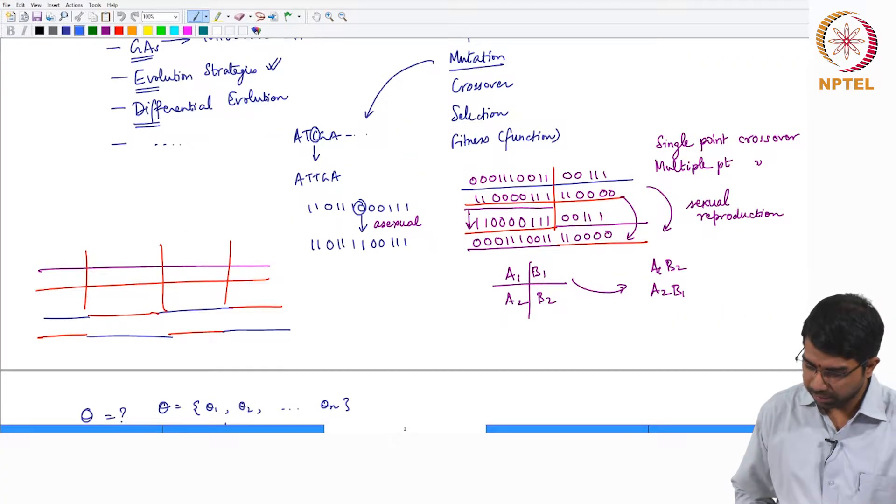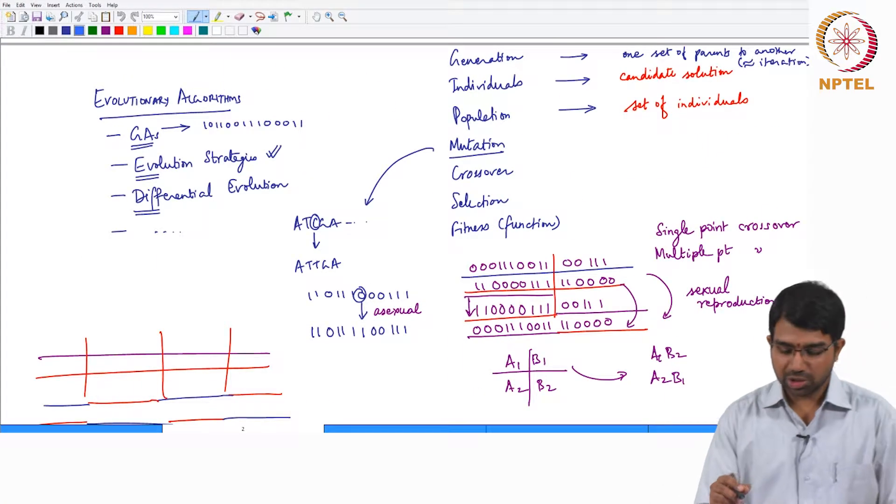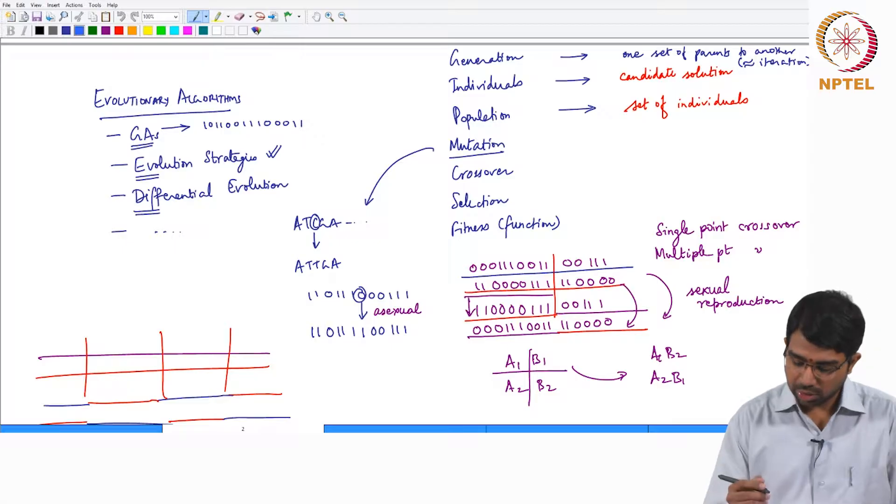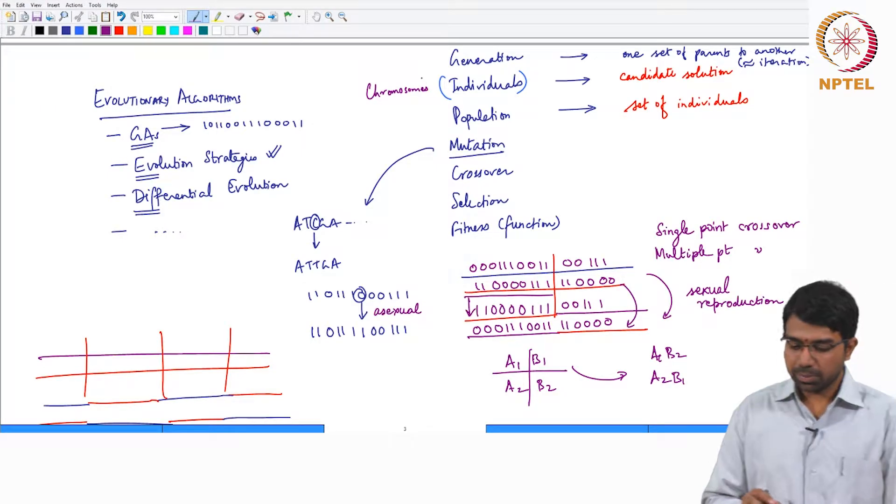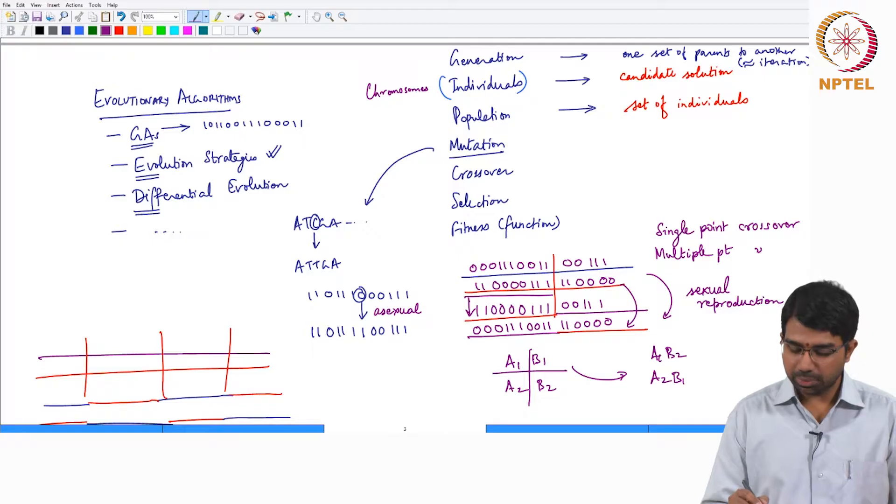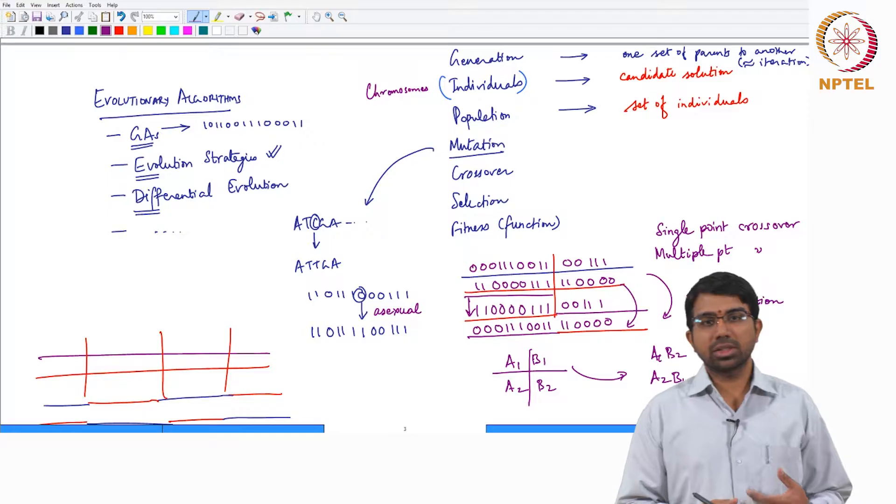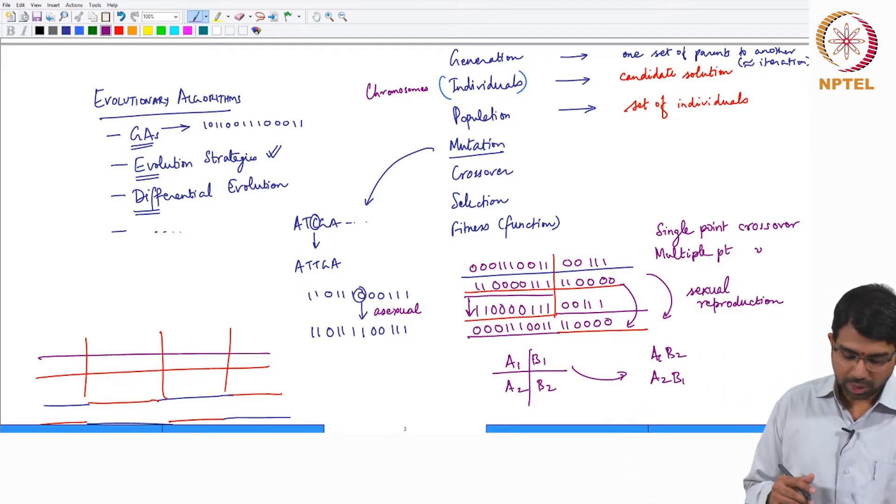We looked at a bunch of concepts yesterday, essentially those of what is a generation, what are individuals or chromosomes, what is the population, mutation, crossover, selection, and so on, and how do we apply this to a practical problem.